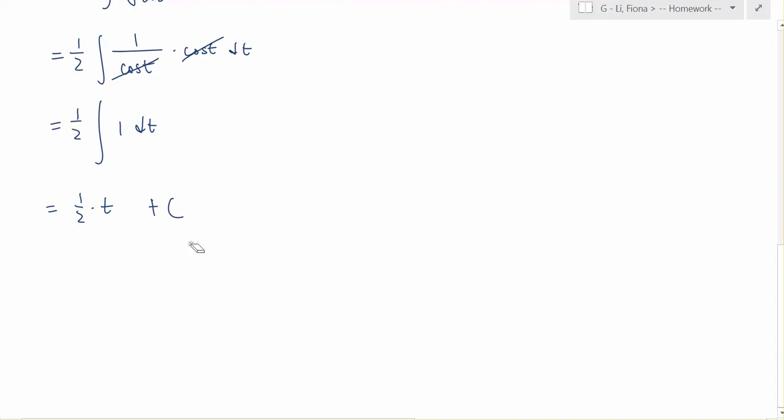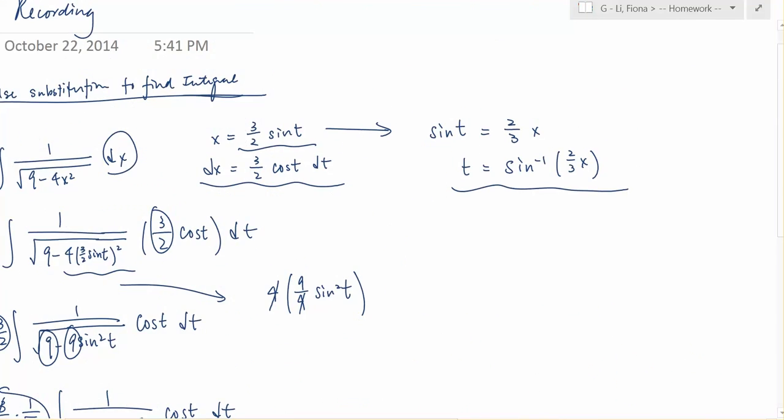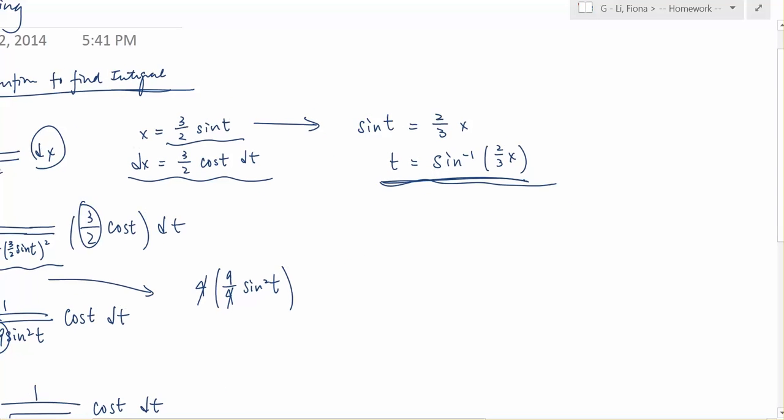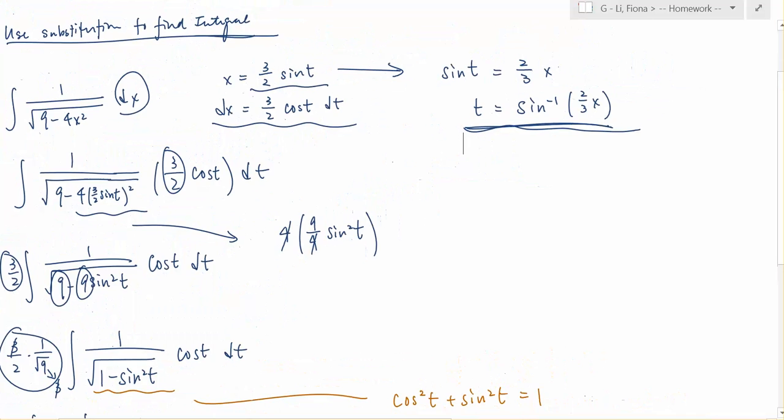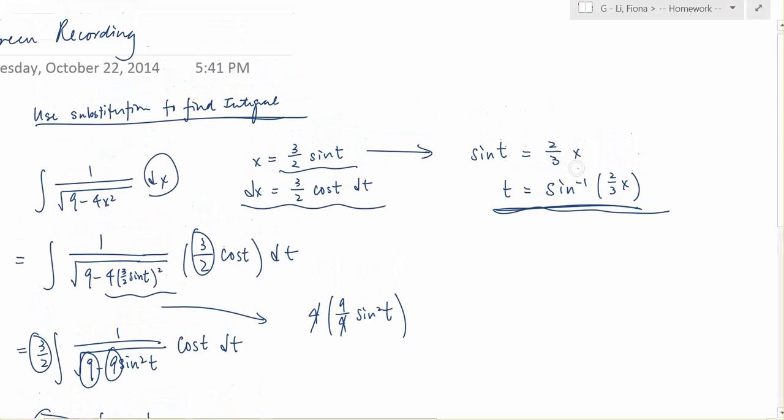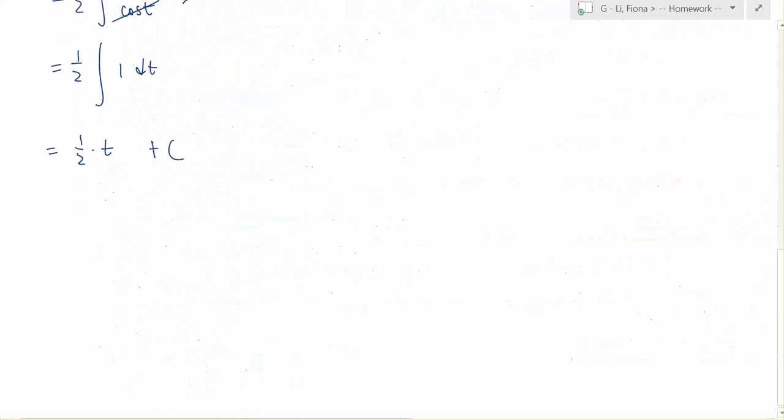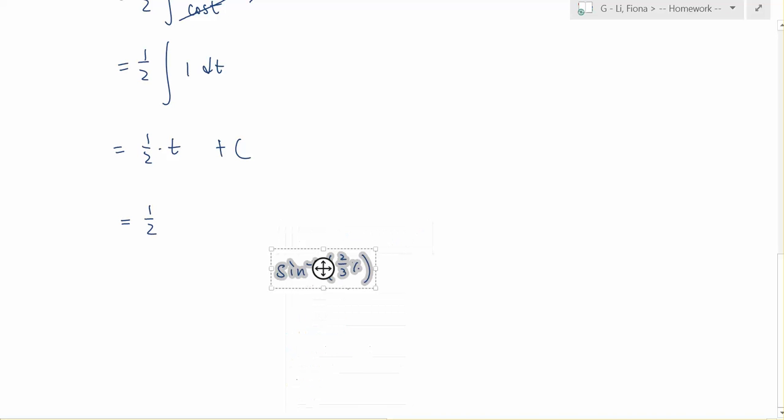We're almost there. So remember, we first jumped ahead and we found that t is equals to arc sine of 2 over 3x. And let's copy this part to down below. So t is equals to this part and plus c.